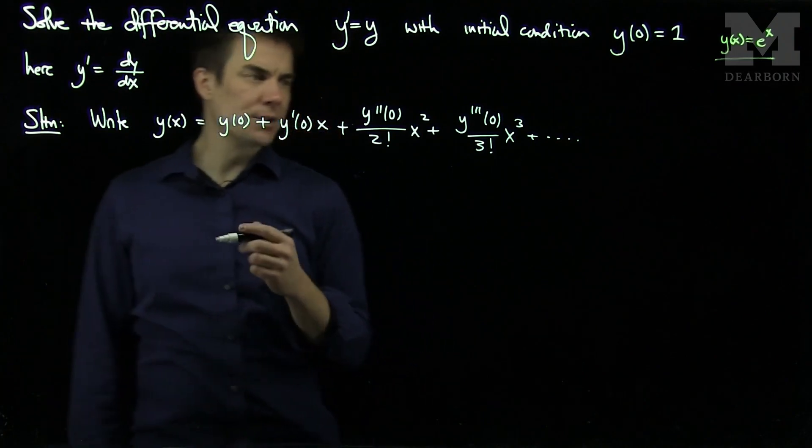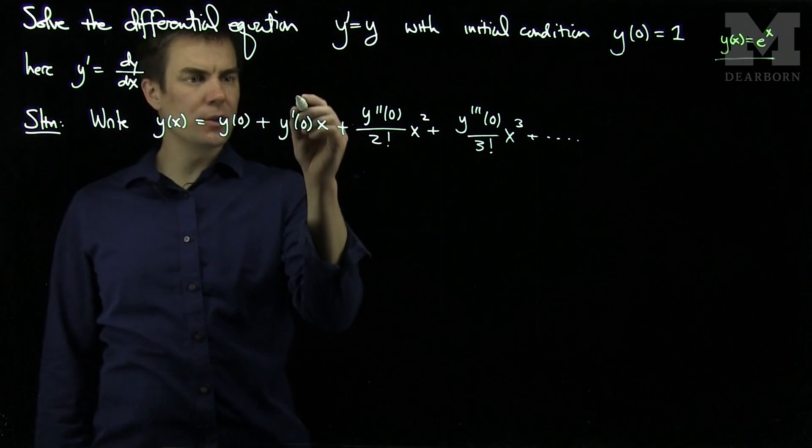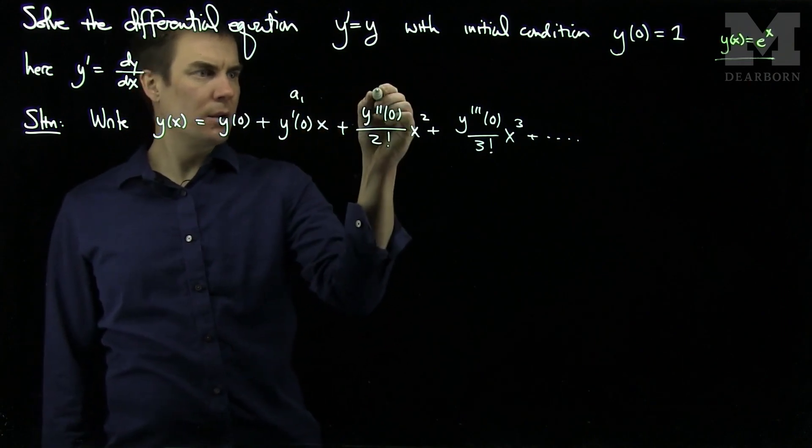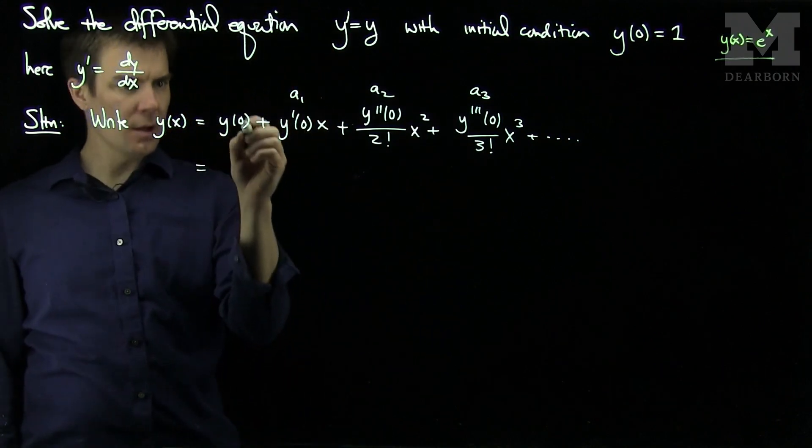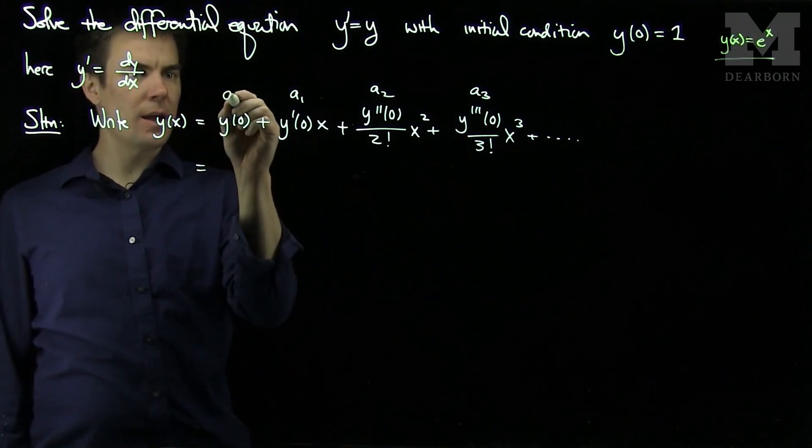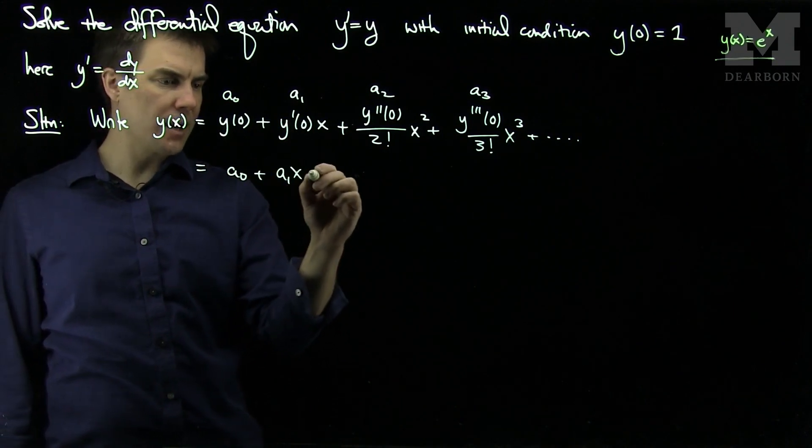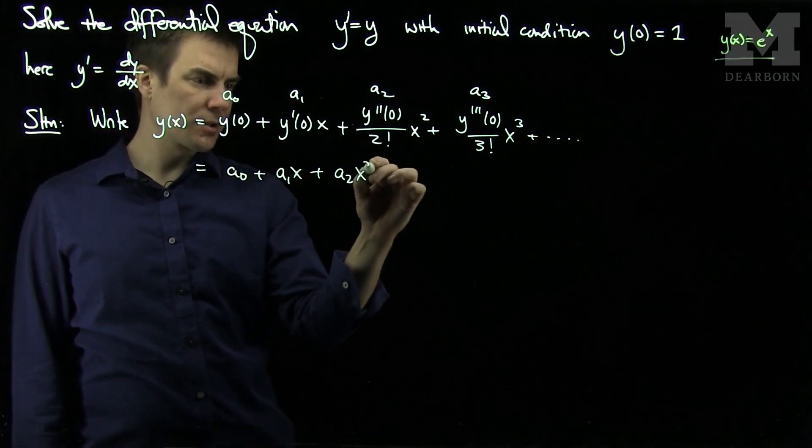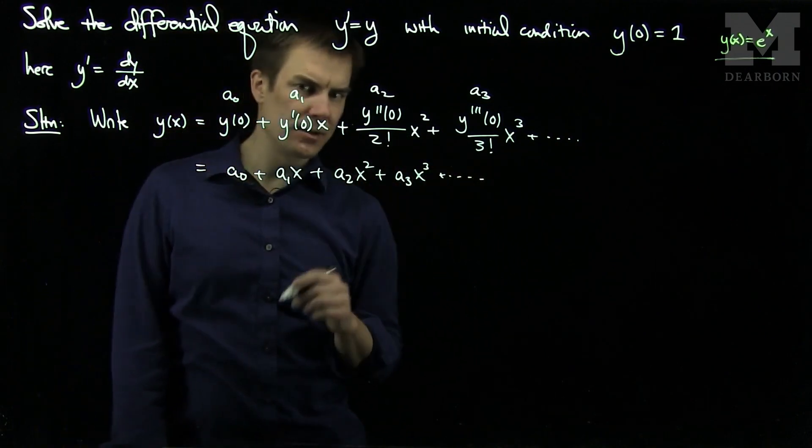For notational simplicity, instead of writing y prime of 0, y double prime of 0, I'll call these coefficients a1, a2, a3, and a4. And of course we know that y of 0 is 1, I'll call that a0. So we have a0, an a1x, an a2x squared, an a3x cubed, and so on.